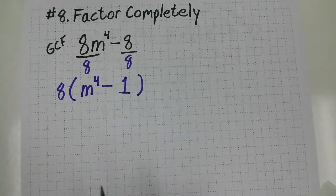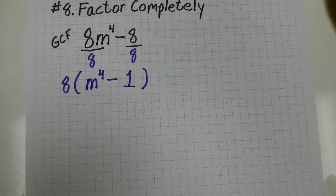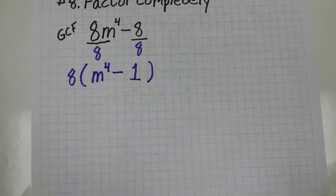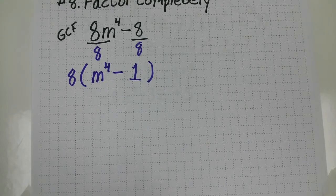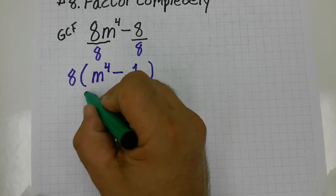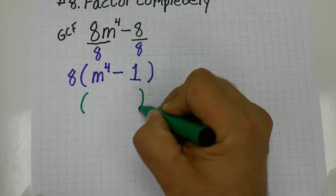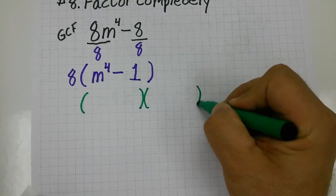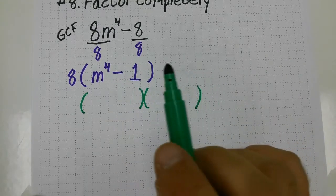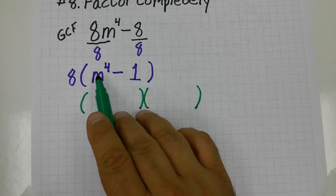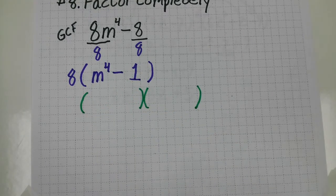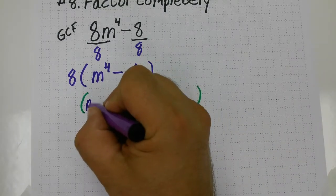m to the fourth minus 1 is a difference of two perfect squares. So what you need to ask yourself now is what times what equals m to the fourth. So this difference of two perfect squares—difference meaning minus sign or negative—and two perfect squares, m to the fourth and one, are both considered perfect squares. So m to the second times m to the second, or m squared times m squared, equals m to the fourth.